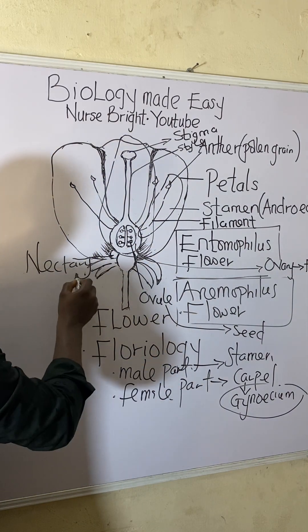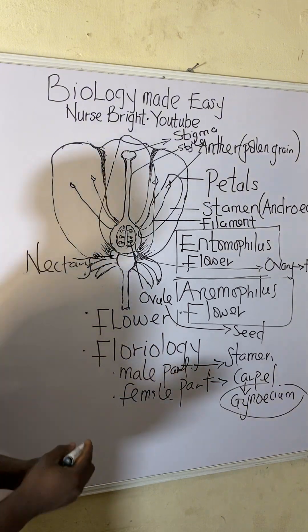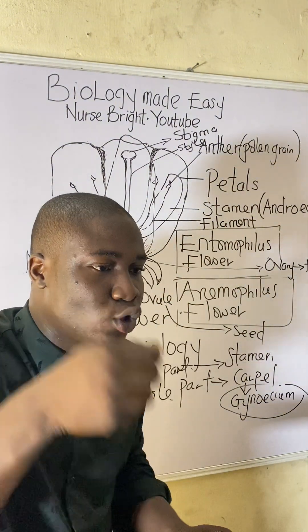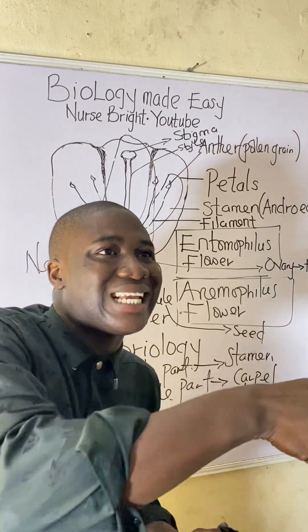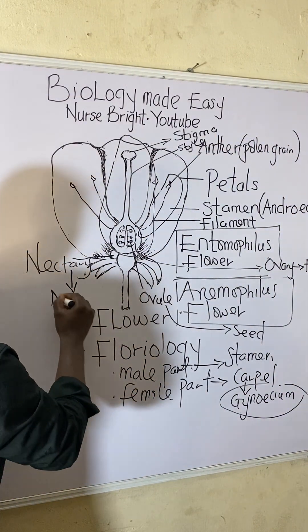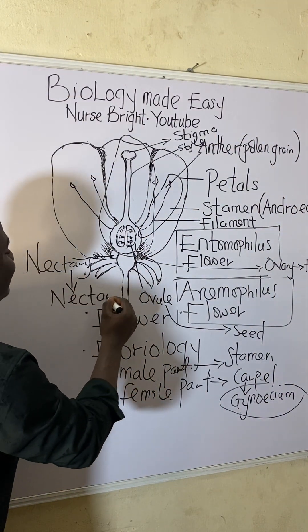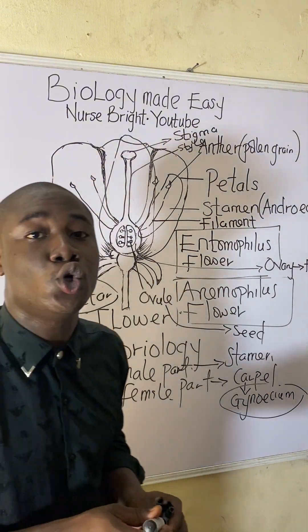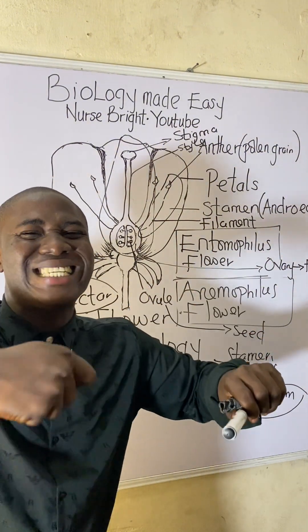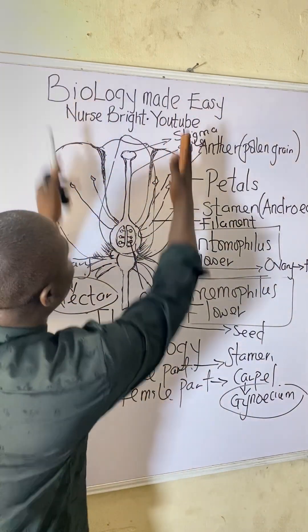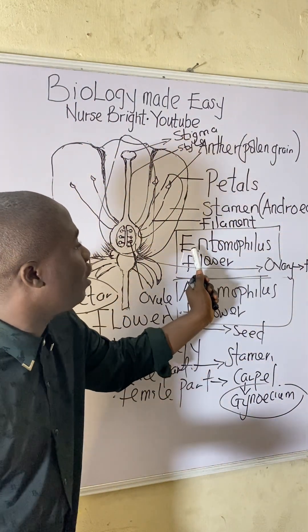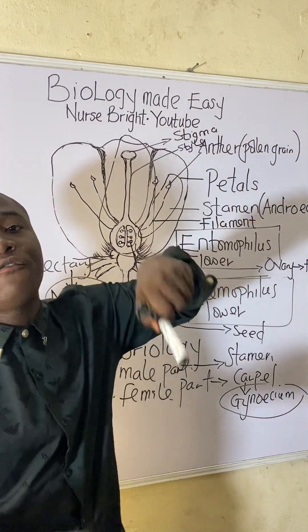This structure here is called the nectary. From the word nectary, it produces a substance that insects feed on, called nectar. Nectar is a sugary substance that insects feed on, making this an insect-pollinated, or entomophilous, flower.